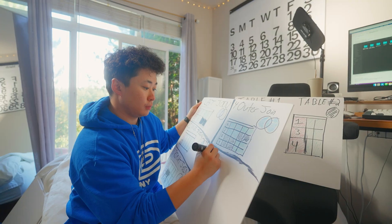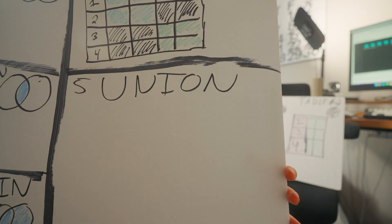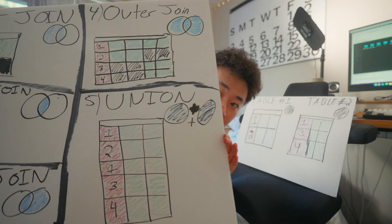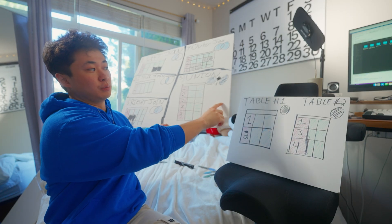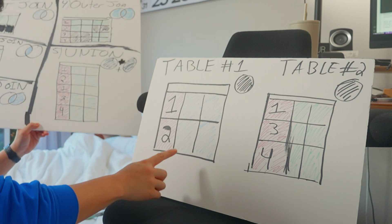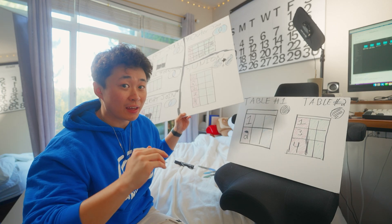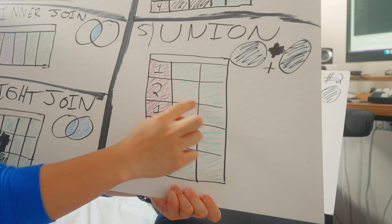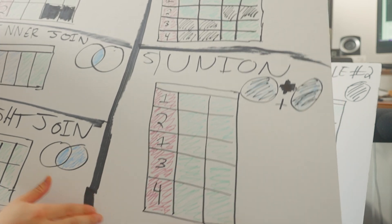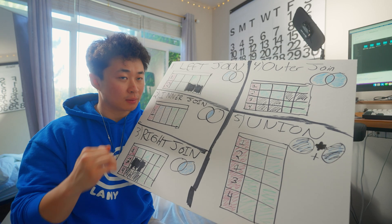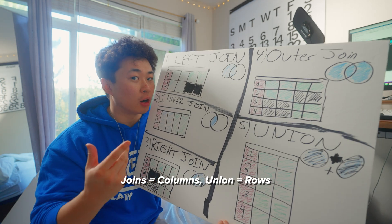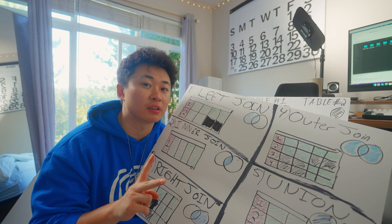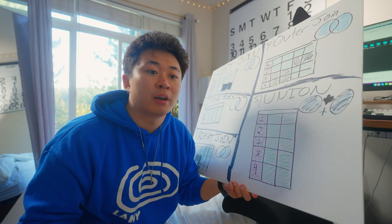Last but not least, we have the union. When we think about union, we have table one with values one and two, and we're going to stack it right above table two. So we have all the values from table one and all the values from table two — they're literally going on top of each other versus next to each other. Joins combine columns together, whereas union combines rows together. There's a very distinct difference between a join and a union. Here's what union looks like in code.